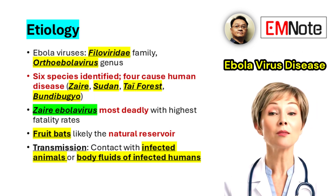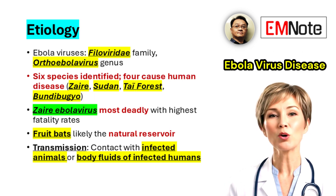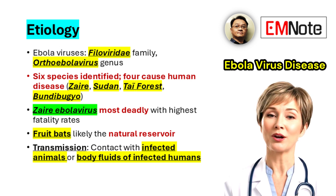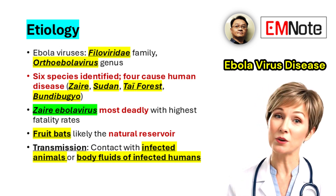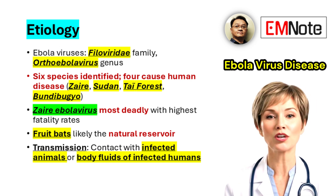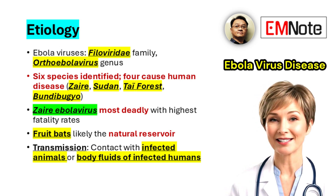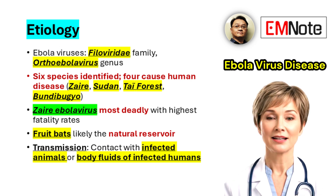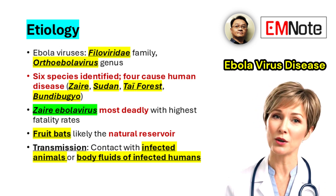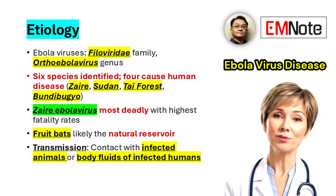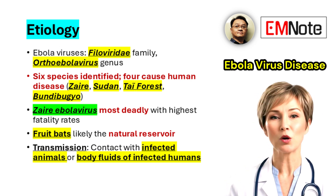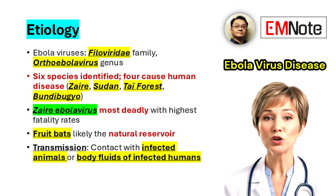Ebola viruses are members of the Filoviridae family, genus Orthoebola virus. To date, six species of Ebola virus have been identified. Of these, Zaire Ebola virus, Sudan Ebola virus, Thai Forest Ebola virus, and Bundabugio Ebola virus are known to cause disease in humans. Zaire Ebola virus is associated with the highest case fatality rates.